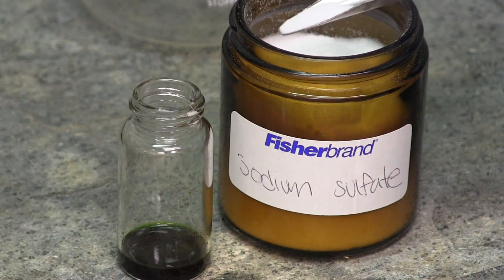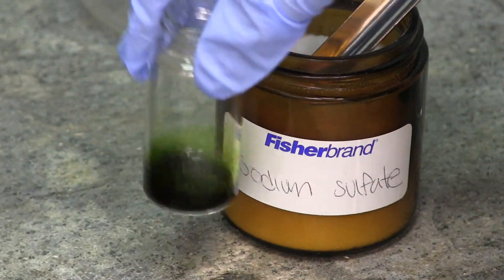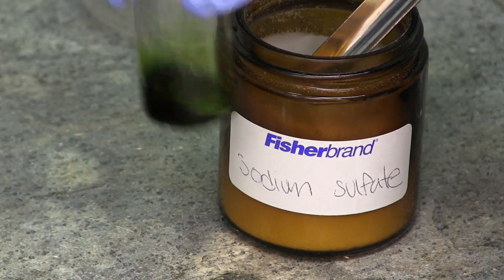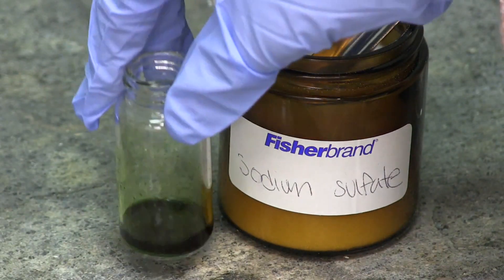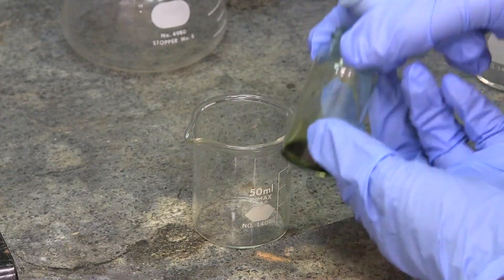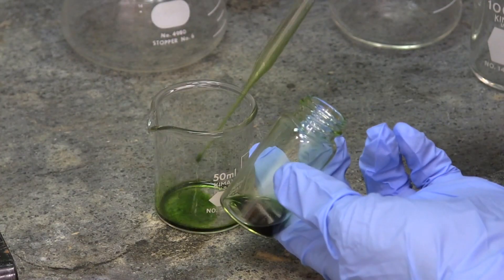The spinach sample is dried with anhydrous sodium sulfate. Not a lot of sodium sulfate is needed. The sample is dry when the sodium sulfate doesn't clump together when shaking the scintillation vial. A pipette is then used to remove the sample from the sodium sulfate into a small beaker.